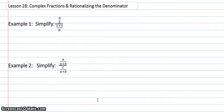So, the first one, we know that when we divide by a fraction, we need to flip that over and multiply by that bottom fraction. So, I'm going to have a over b times b over x plus y. And this is very nice because the b's cancel, and then our answer is just a over x plus y.